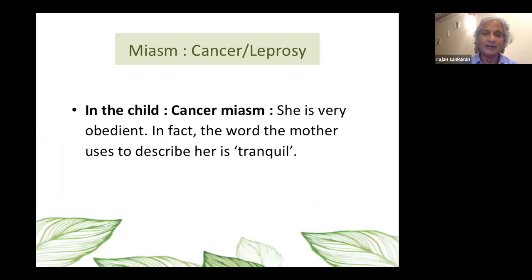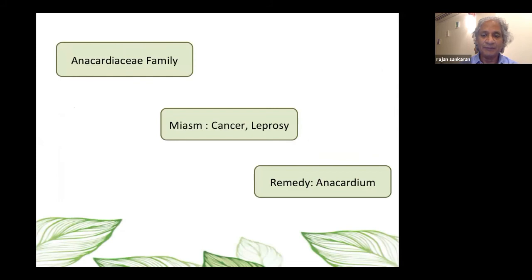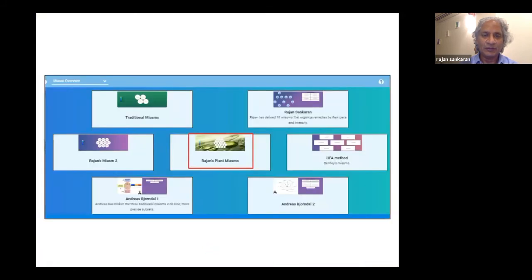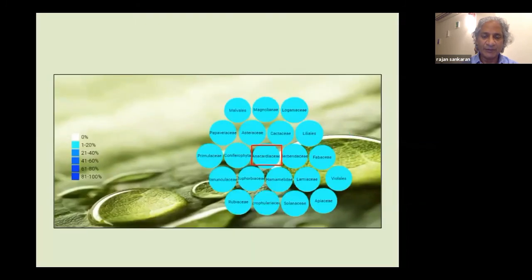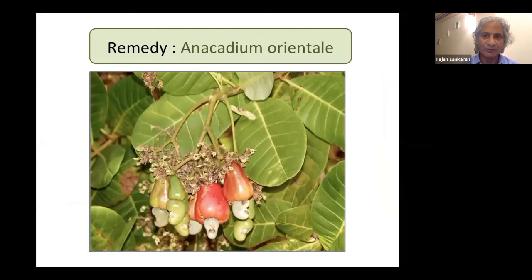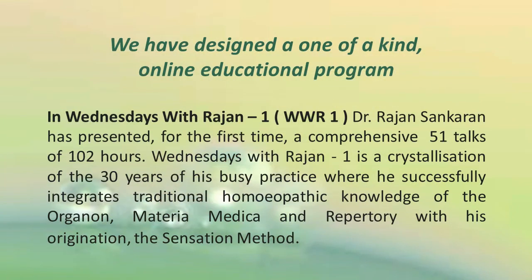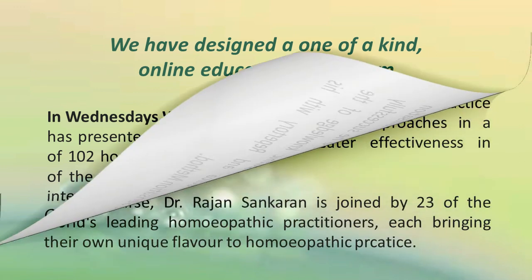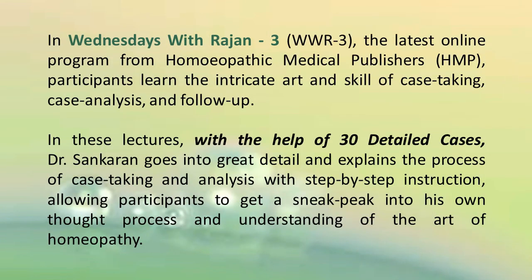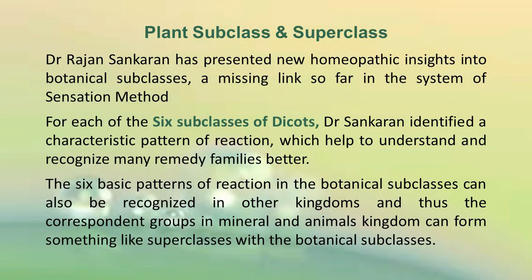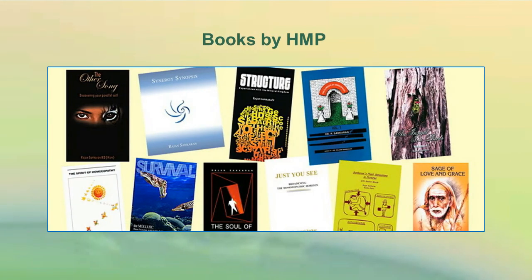In this way you can see the cancer and leprosy miasms in the mother and in the child. And you can also see in the graphs of the various miasms — the miasms of the stepfather and so on. The remedy we gave was anacardium orientale.